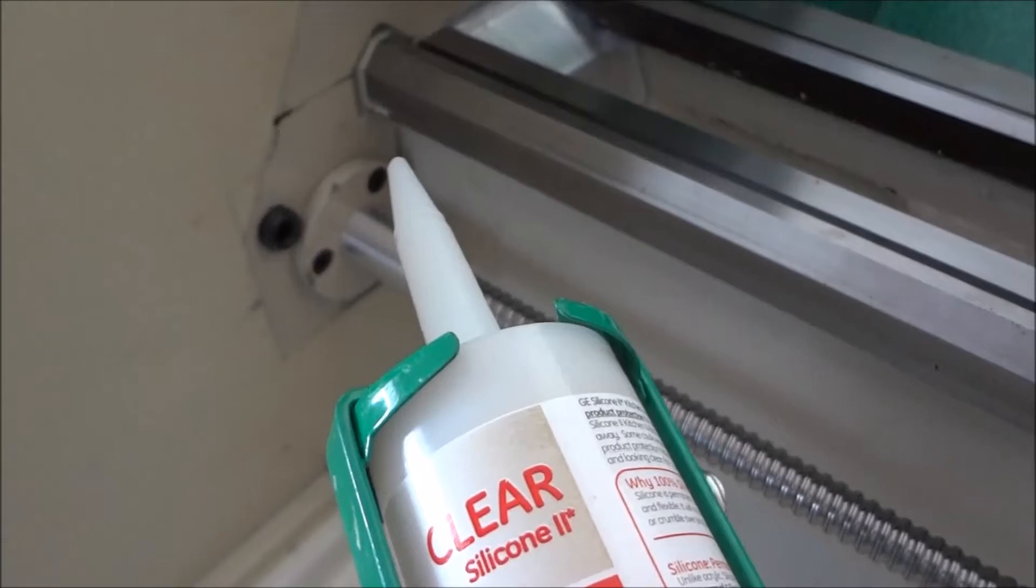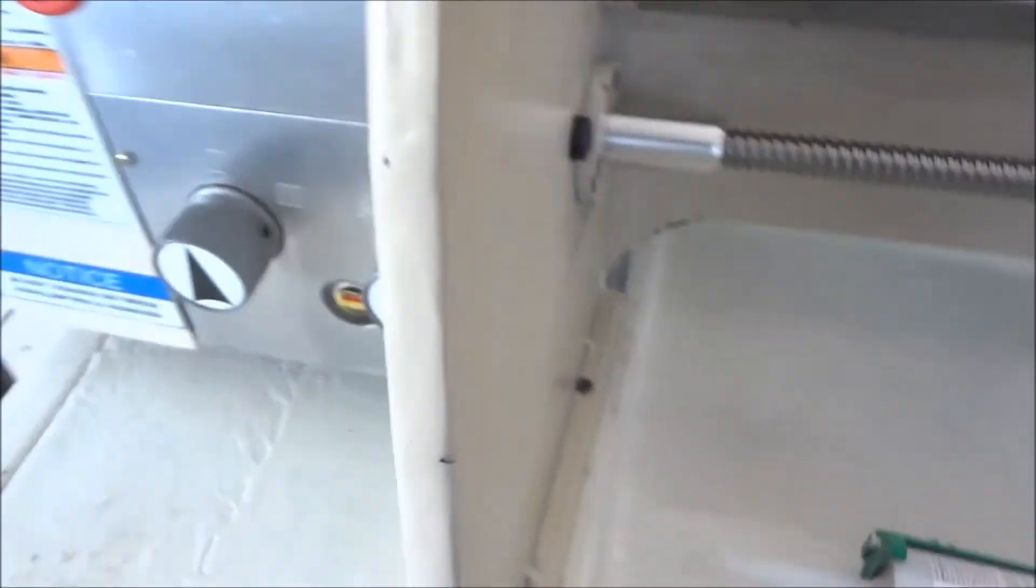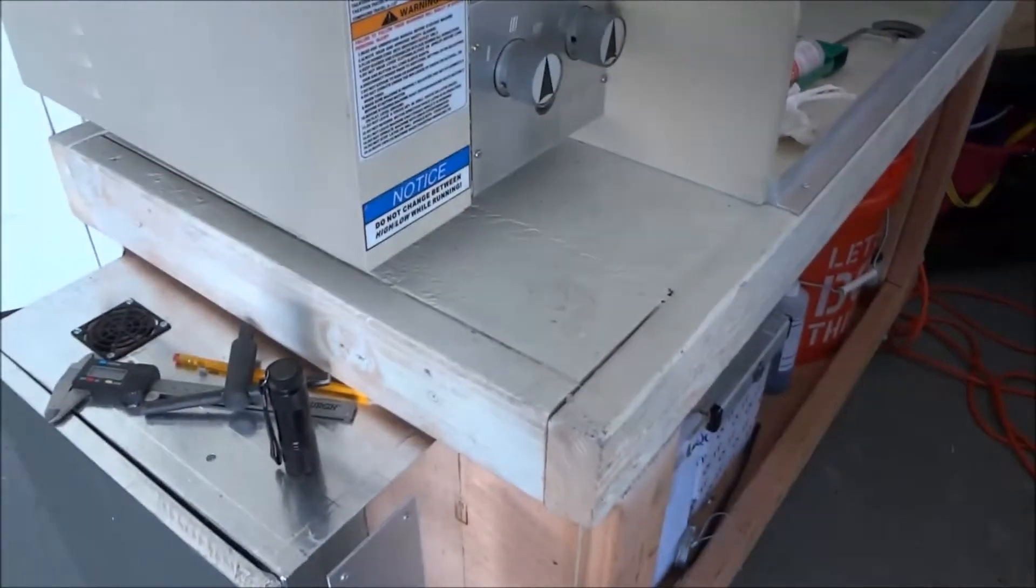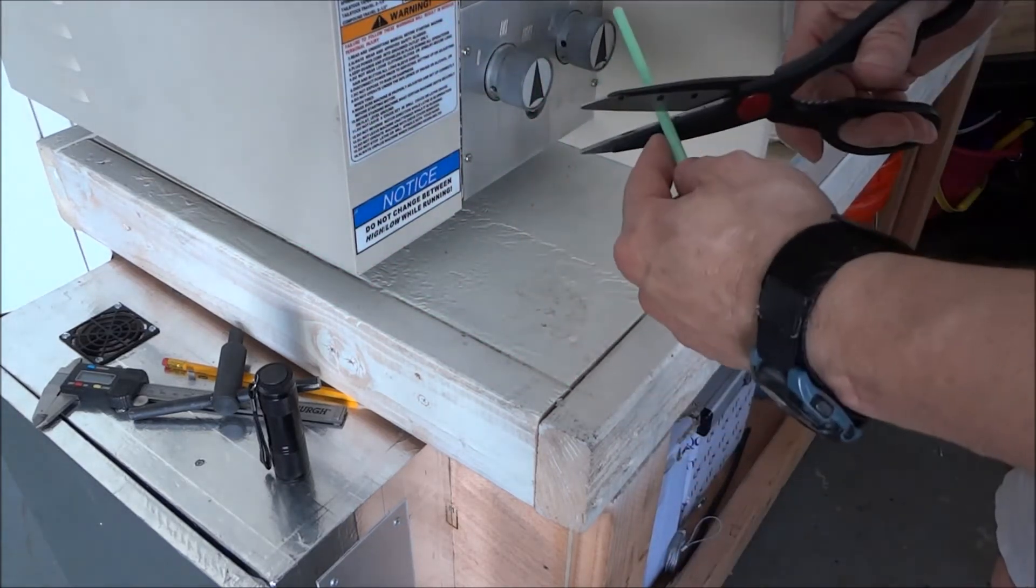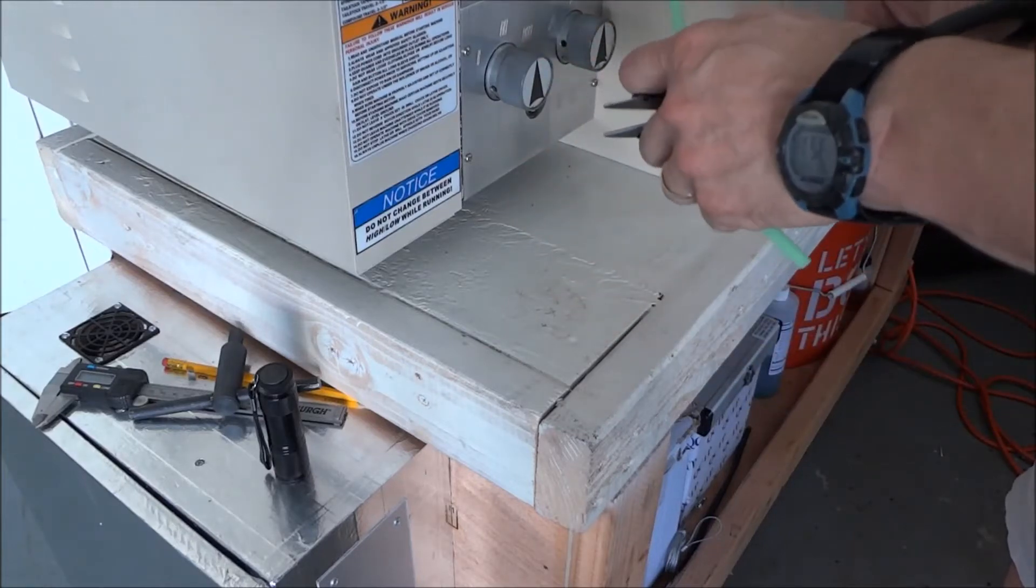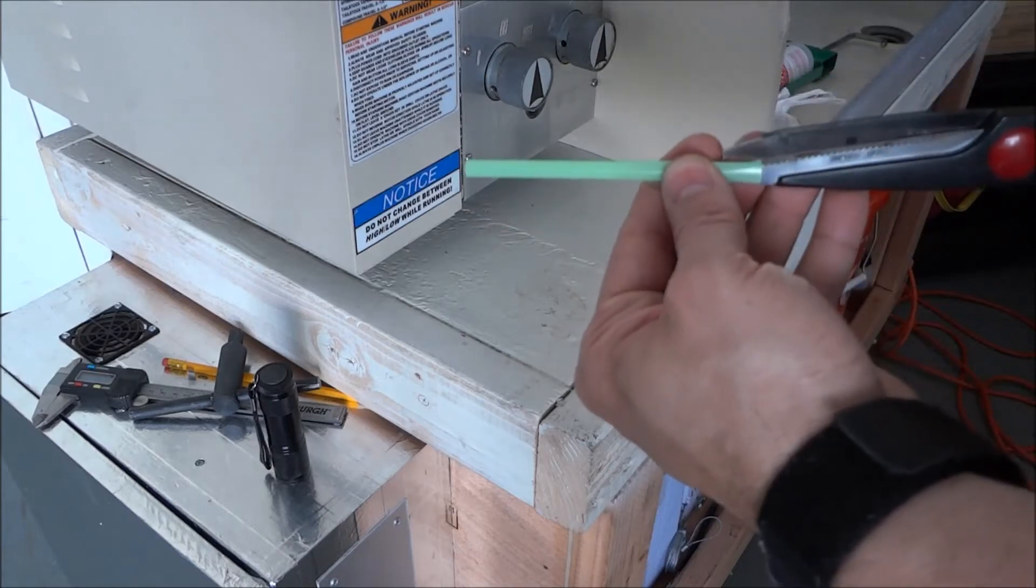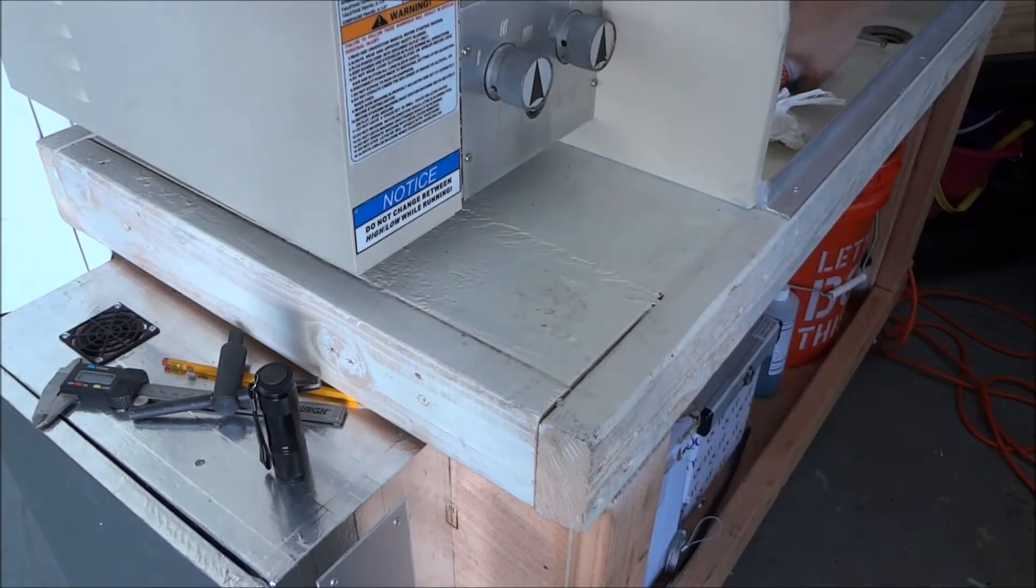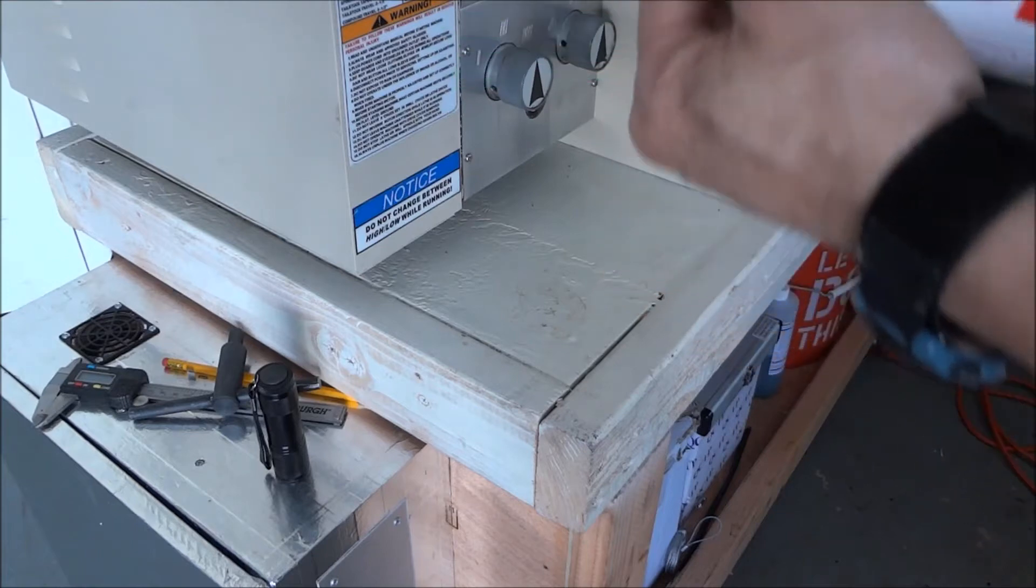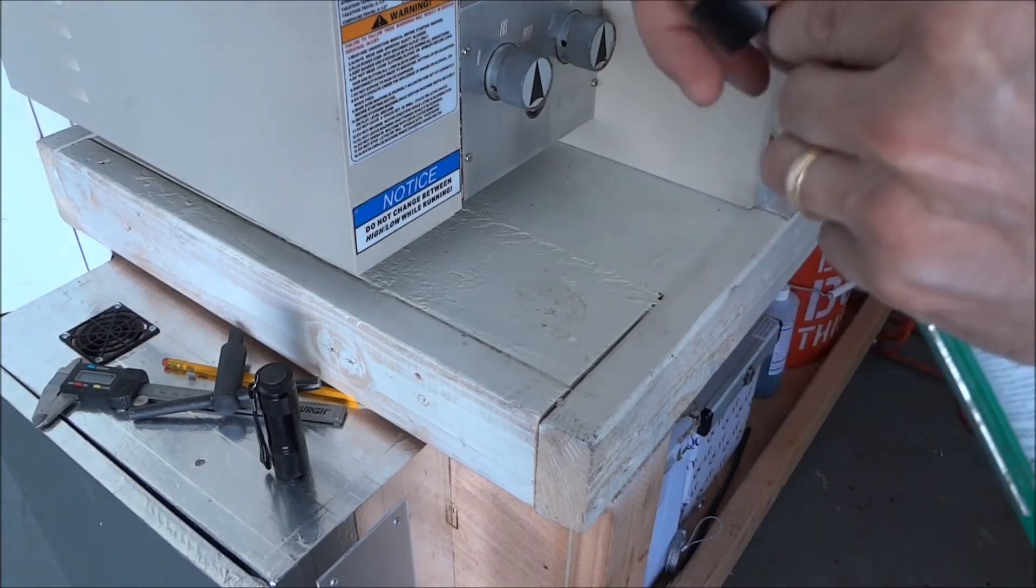I'm trying to silicone these cracks here behind here, but you just can't get in there with the caulking gun. I've got a tip for you that'll help you get in those places that you can't reach. There's about two inches that I can't reach. Here's what you can do to help you out. Take an ordinary drinking straw, make sure you get it long enough, probably three inches or so, clip it off.